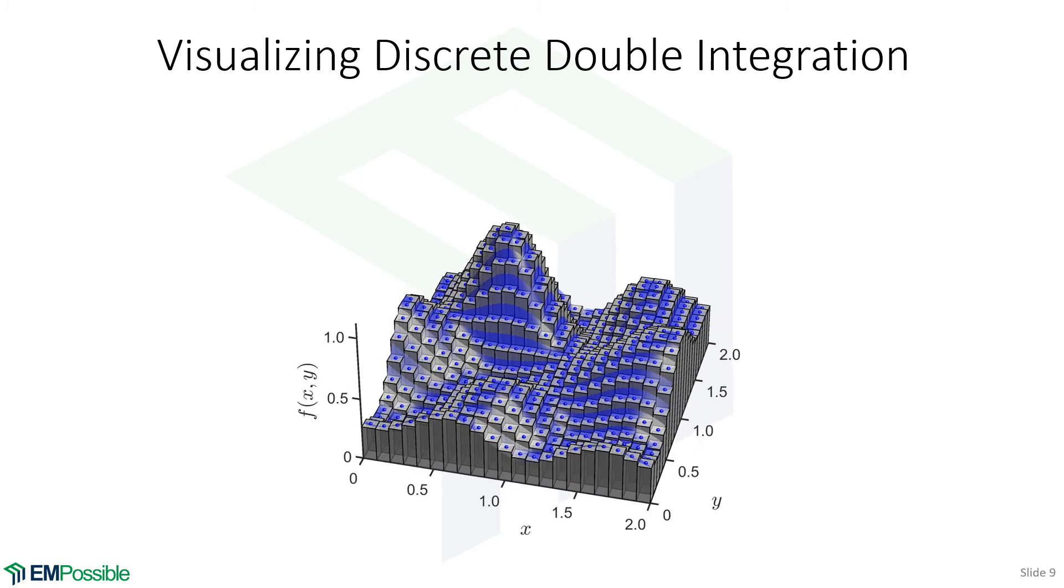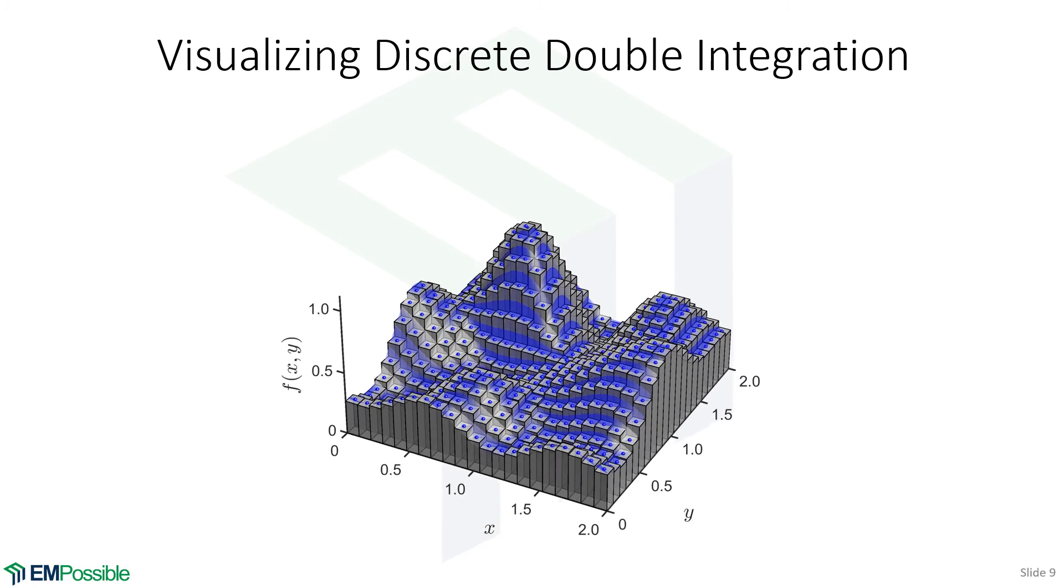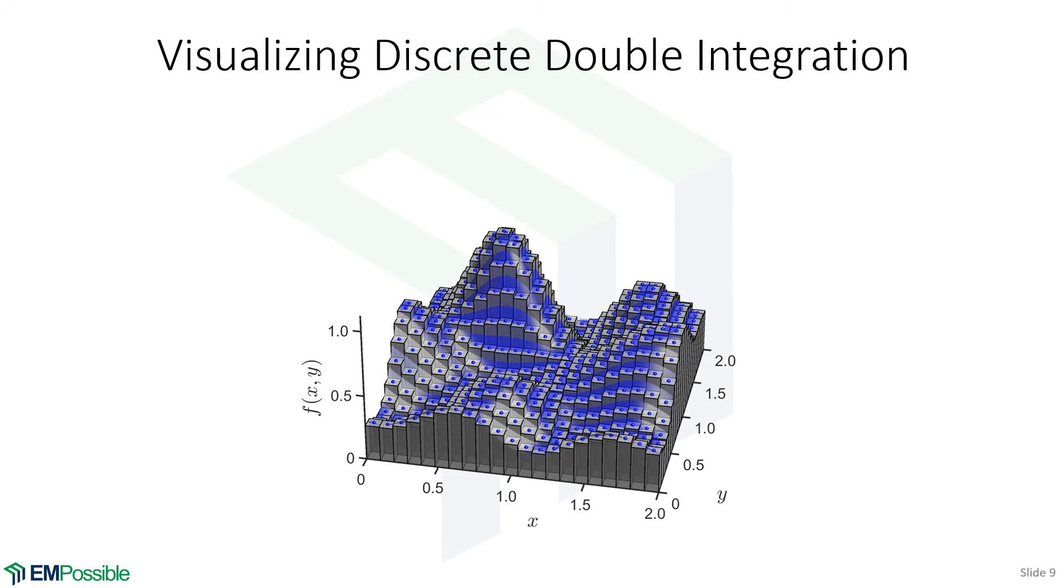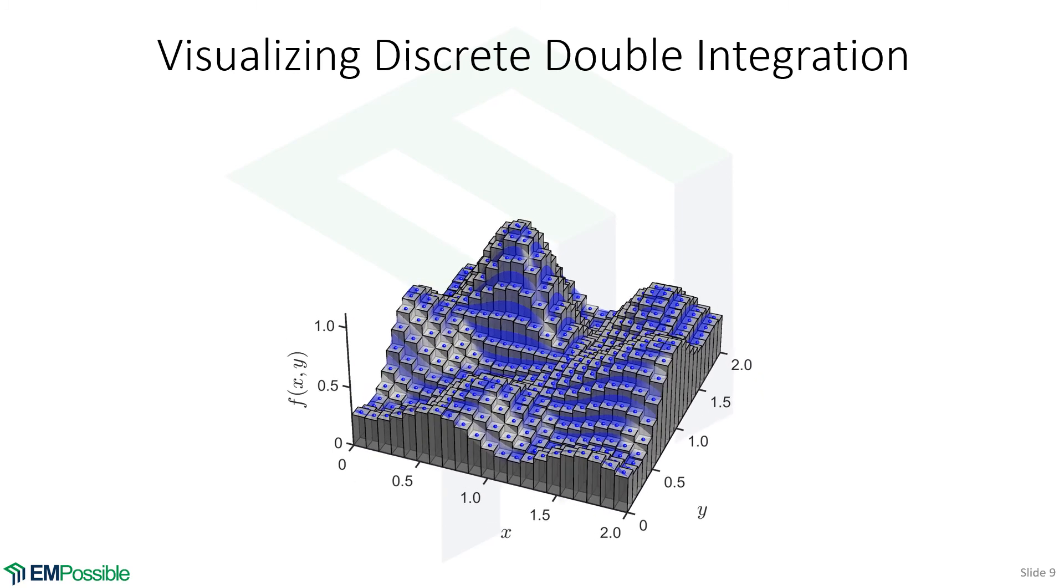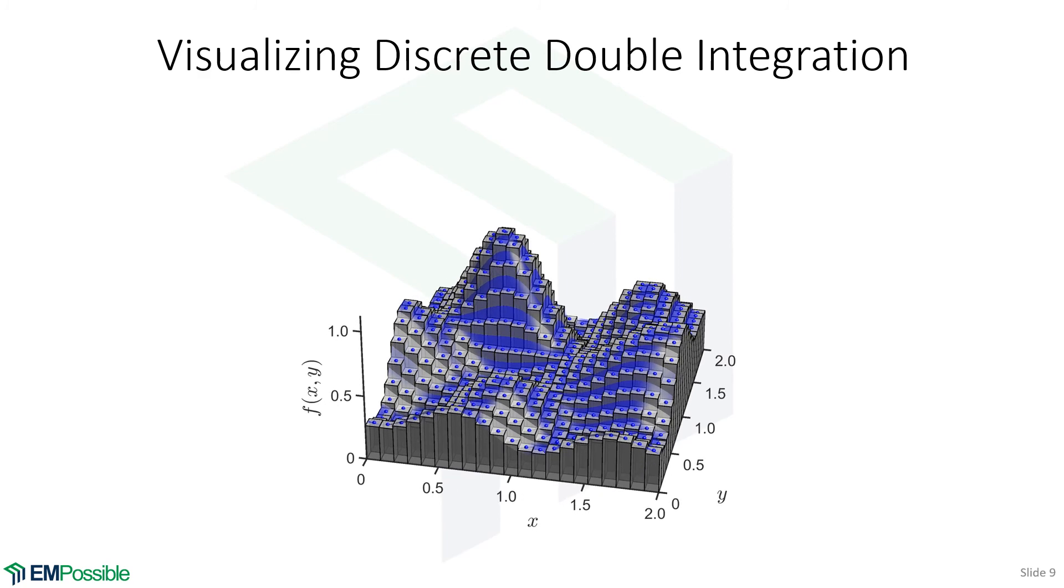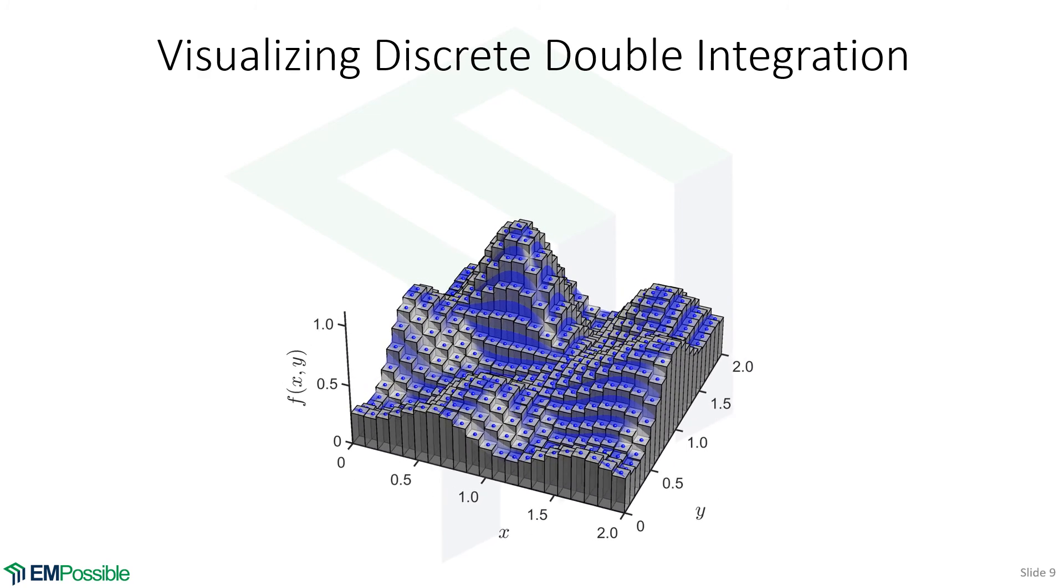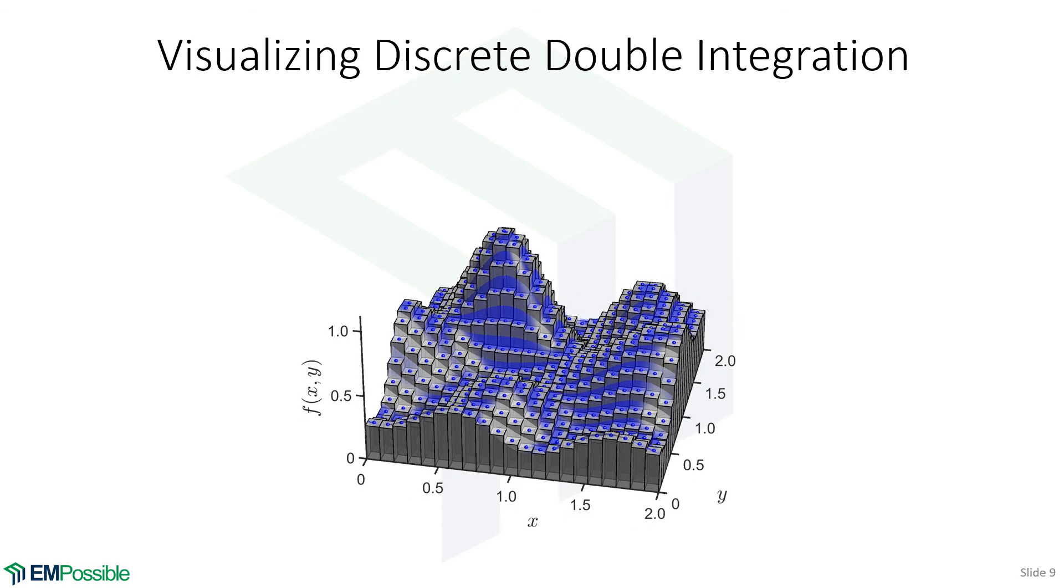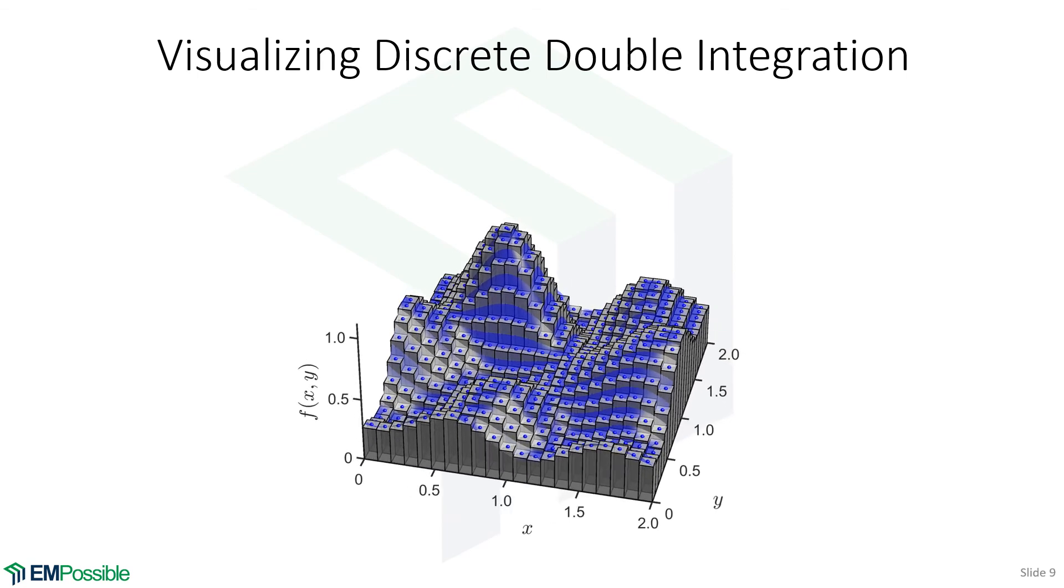Now, of course, we can add more cuboids to this, get a better integration. That will require more memory, more computation time, as we know. So double integration with discrete integration is just a simple extension of what we already know. And we can imagine extending this to three dimensions, four dimensions, five dimensions. I can't visualize that. But we can do it quite easily with discrete integration.